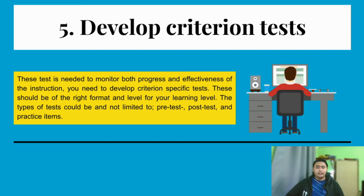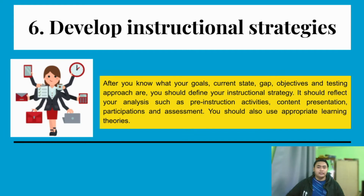The fifth step is Develop Criterion Test. This test is needed to monitor both the progress and effectiveness of the instruction. You need to develop criterion-specific tests — tests that must be met with the criteria you need in the objective. This should be of the right format and level for your learning level, for example degree level for university. Types of tests include pre-test before learning, post-test after learning, and practice items in between the learning session.